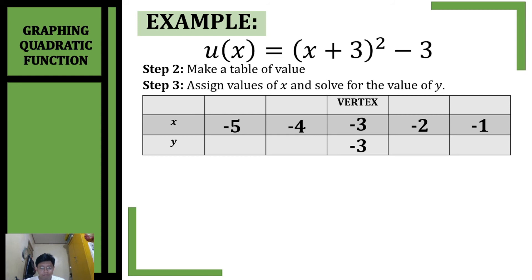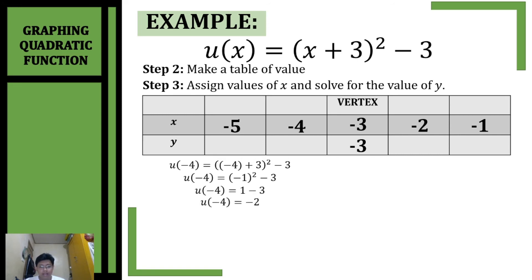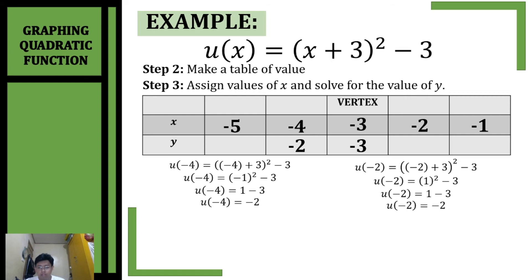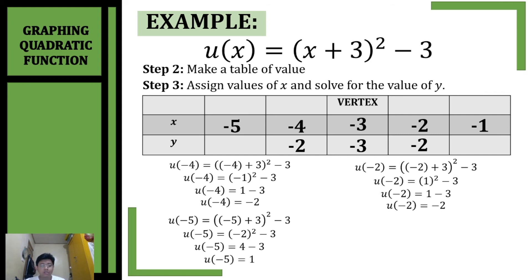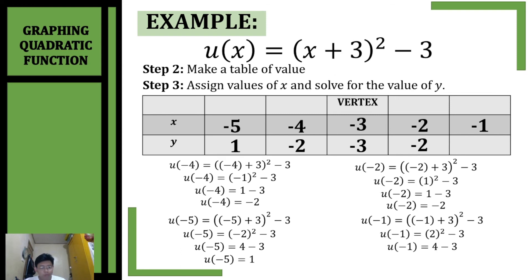Substituting negative 4 into our original function, replacing all x by negative 4 and simplifying, we get negative 2. Substituting negative 2, simplifying and combining like terms, it is also negative 2. Substituting negative 5, combining like terms and squaring, we get 1. Substituting negative 1, combining like terms and squaring, we also get positive 1 for y.